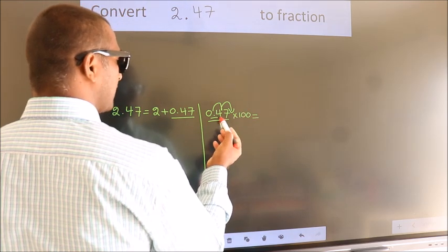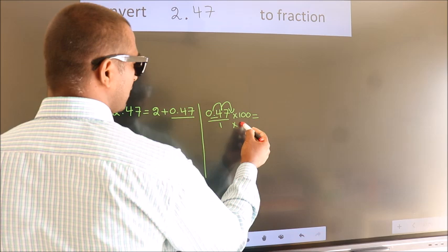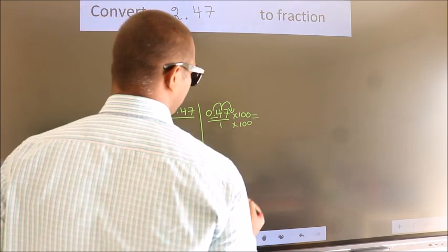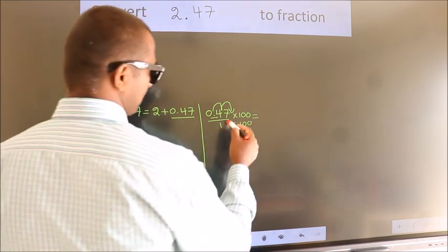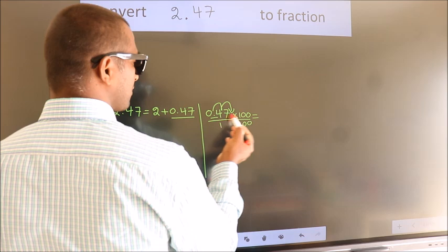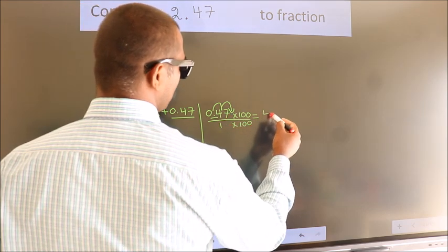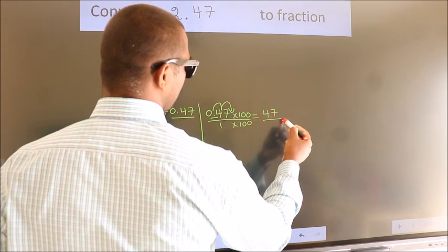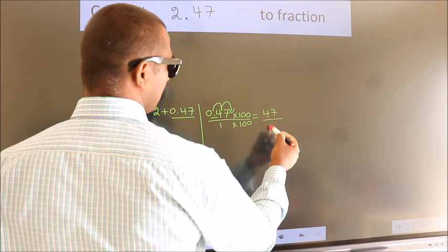Whatever we are multiplying in the numerator, in the denominator also do the same. Next, 0.47 into 100 is 47, and 1 into 100 is 100.